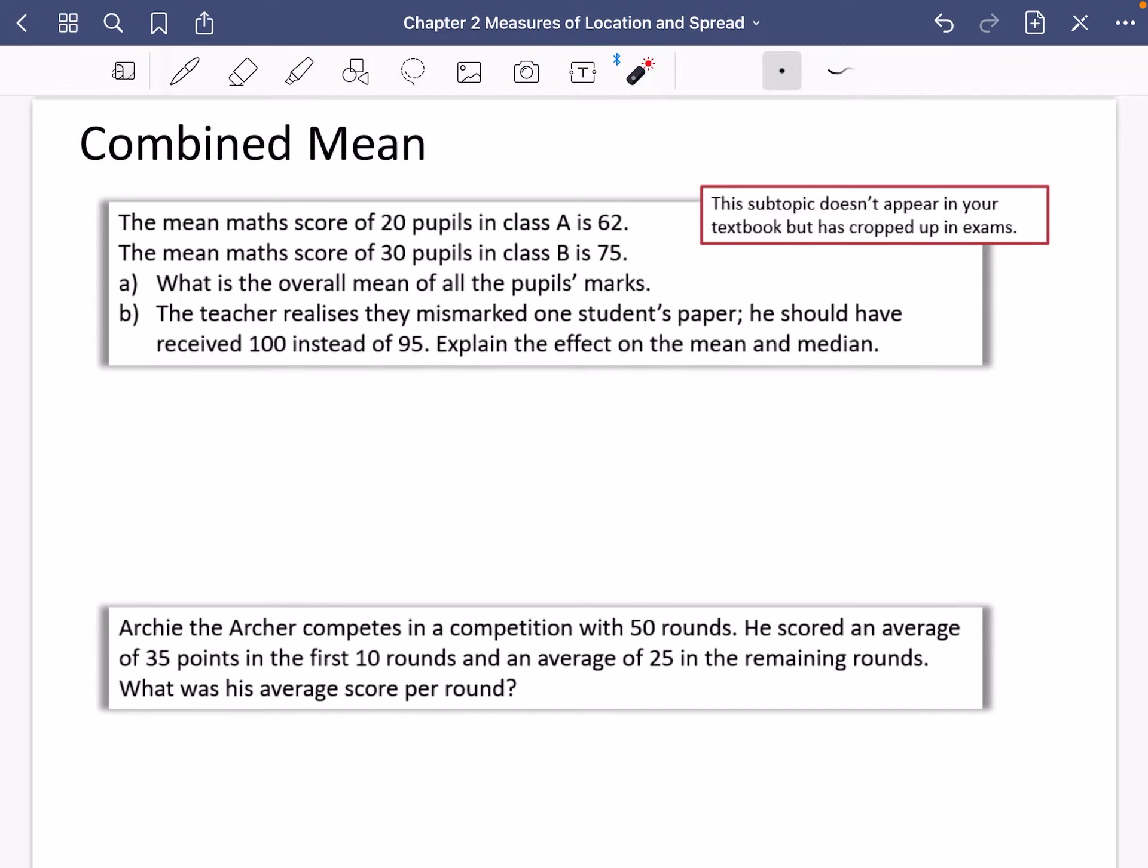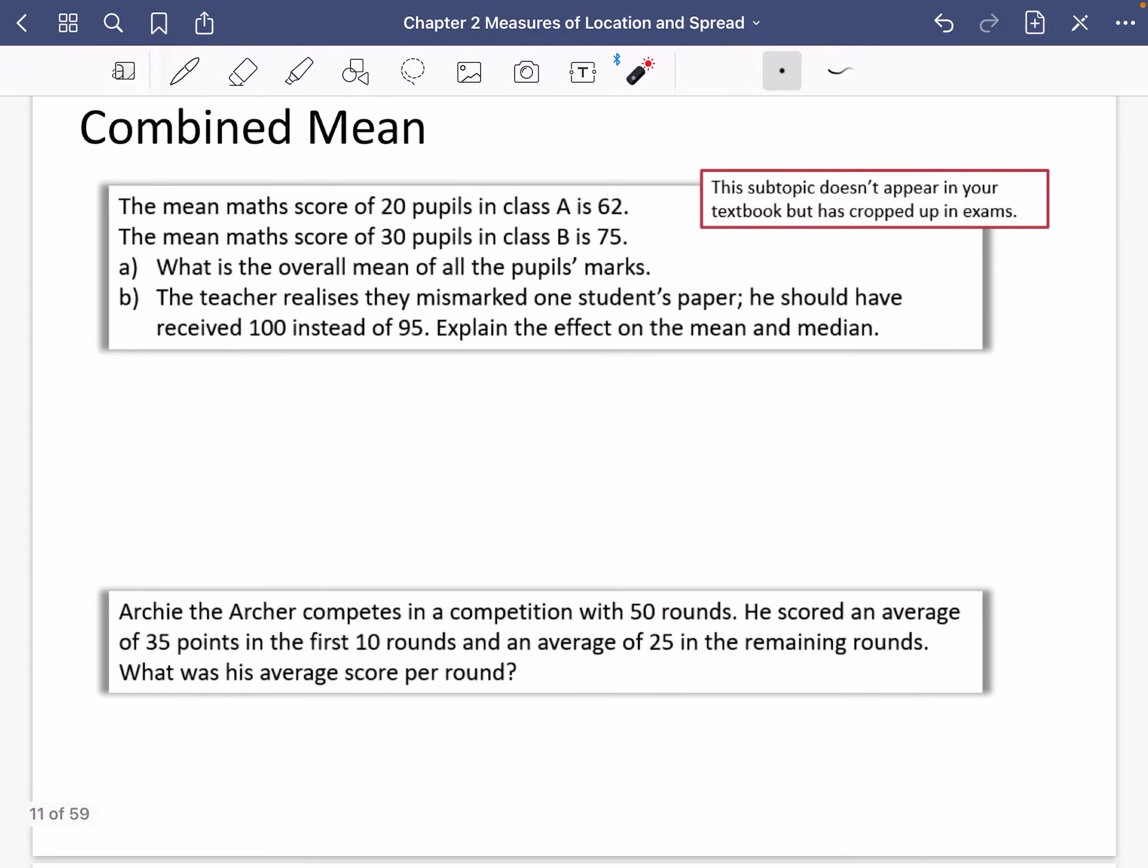Okay, so I wanted to talk to you about something that actually doesn't appear in the textbook, but it does crop up in exams sometimes, and it's called the combined mean. It kind of does just follow from common sense, but I wanted to point it out just to make sure that everybody was on the same page. So let's have a look at what I mean by the combined mean. It's about talking about the mean of two different things put together.